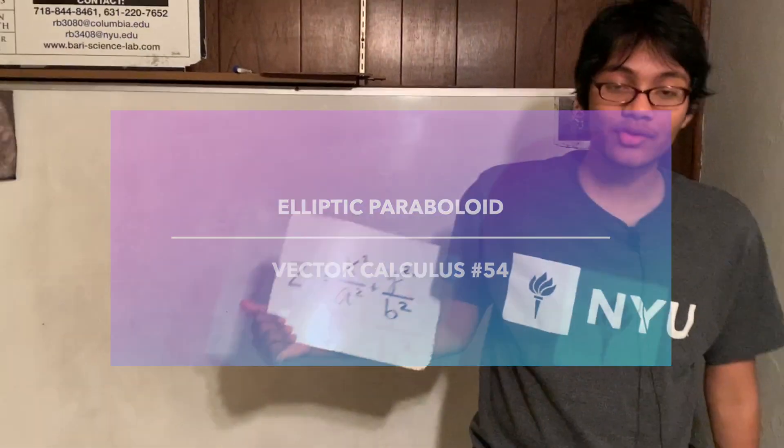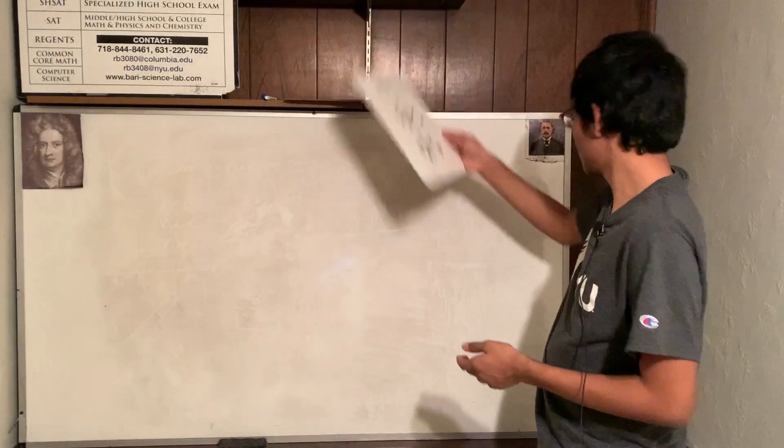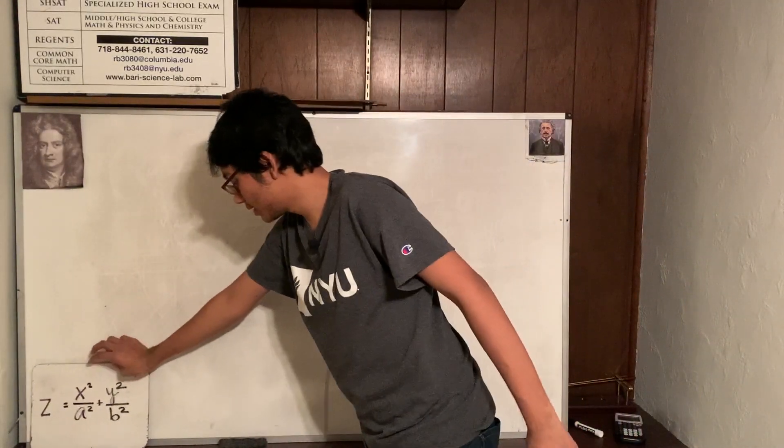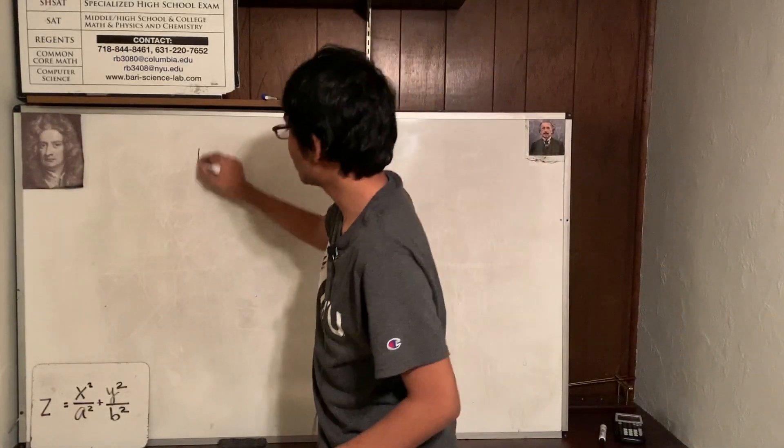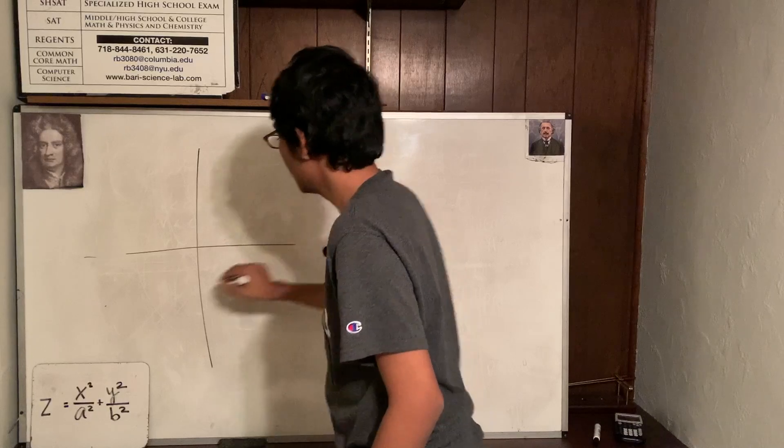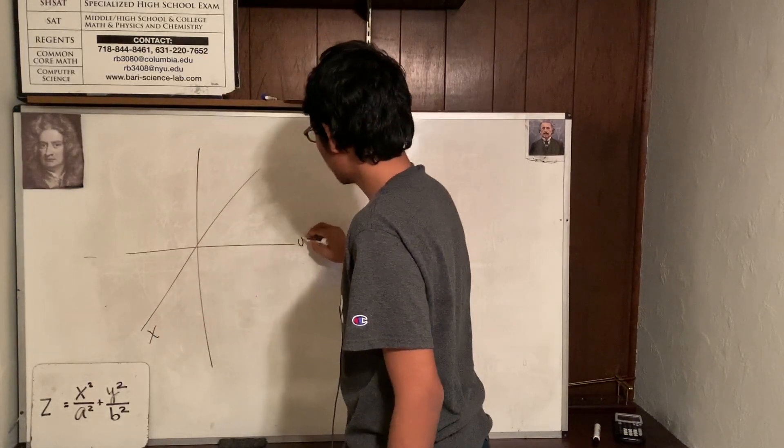Z equals x squared over a squared plus y squared over b squared. First thing you want to do, let's draw the x, y, and z axes. So here's my z, here's my y, and here's my x. Keeping things simple: x, y, z.